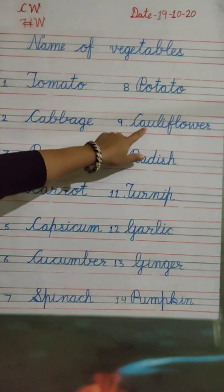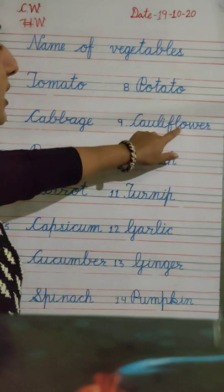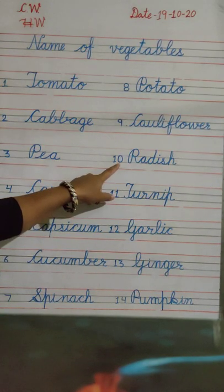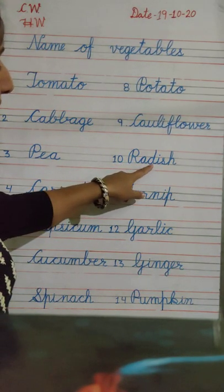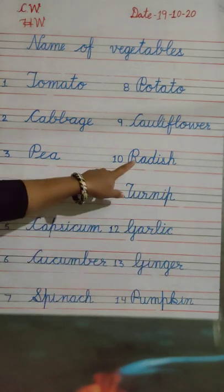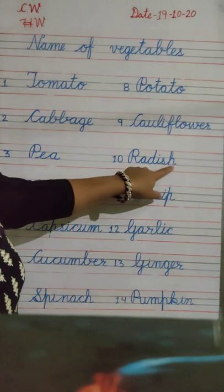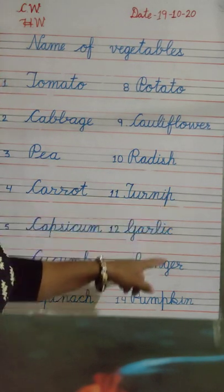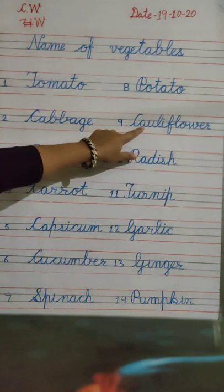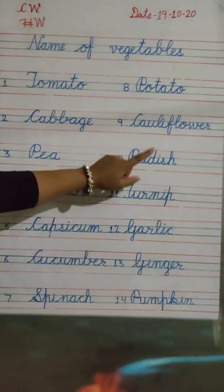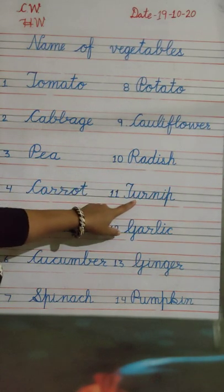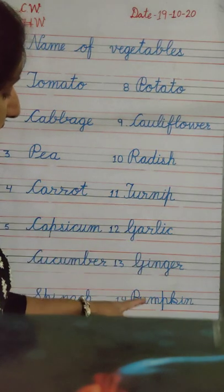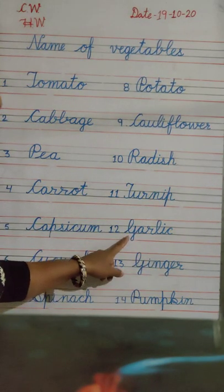Nine. C, A, U, L, I, F, L, O, W, E, R — Cauliflower. Next, number 10. R, A, D, I, S, H — Radish. Next. T, U, R, N, I, P — Turnip. Okay. Cauliflower means Phool Gobhi. Radish — Mooli. Turnip — Shalgam. Next. G, A, R, L, I, C — Garlic. Garlic means Lahsun.